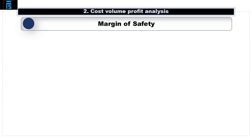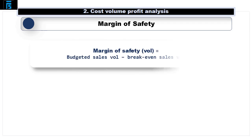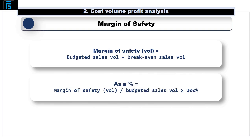We can extend the breakeven formula further to find the margin of safety. This is the difference between our budgeted sales volume and the breakeven sales volume, and it tells us how far our sales volume can fall before we start making a loss. We can calculate the margin of safety as an absolute figure — budgeted sales minus the breakeven sales volume — or as a percentage by taking that absolute figure, dividing by the budgeted sales volume, and multiplying by 100%. The larger the margin of safety relative to the budgeted figures, the better, as this means sales would have to drop some way before we start making a loss.